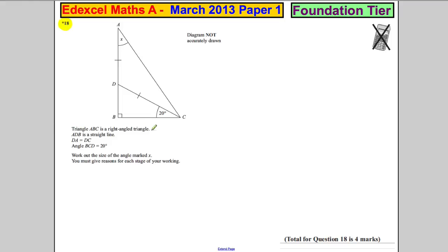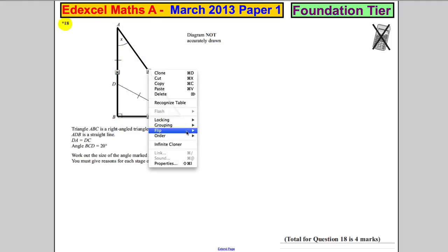It says triangle ABC is a right angle triangle, so I'm going to firstly draw what I mean. ABC is this one, and that's a right angle triangle, so I'm just going to group that.